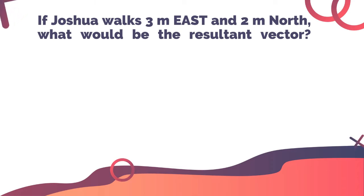For example, in this problem, if Joshua walks 3 meters east and 2 meters north, what would be the resultant vector? The first thing you need to do when finding the resultant vector is to illustrate or draw the vector.